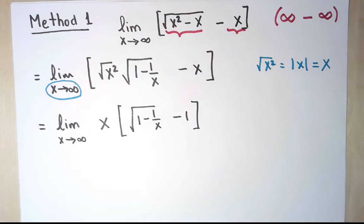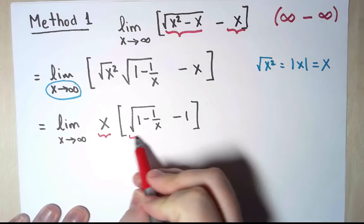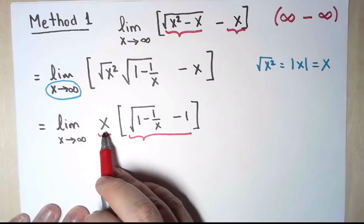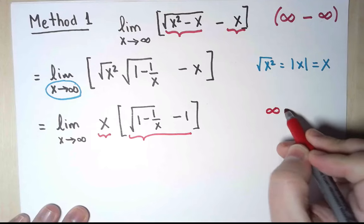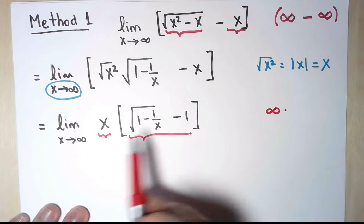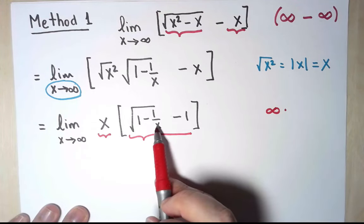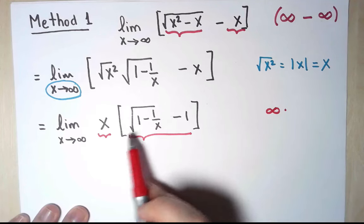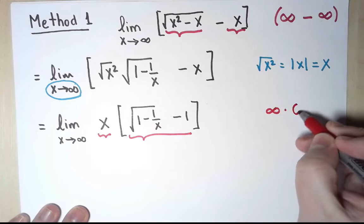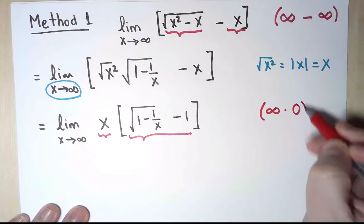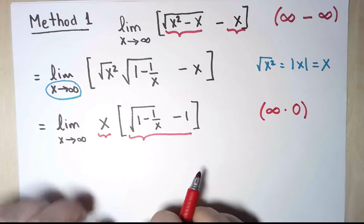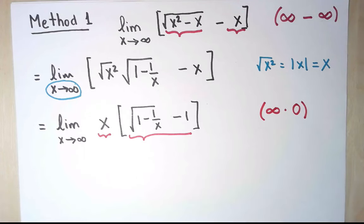And now let's see what I have here. I have now a product of two functions. This function, and this function. Now the limit of x is simply infinity. As for inside the bracket, well, as x goes to infinity, 1 over x goes to 0, so this goes to 1. Minus 1 is 0. Look at that. I still have an indeterminate form. 0 times infinity is an indeterminate form. But now it's a product, and I know how to deal with those.